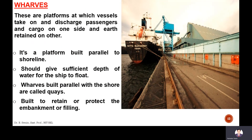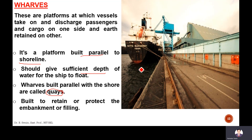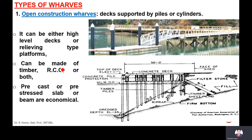Wharves are like platforms at a rail station — these are platforms at which vessels take on or discharge passengers and cargo on one side and return on the other. Wharves can be constructed at any point in the harbour. A platform built parallel to the shoreline where the vessel lies alongside is called a quay. Sufficient depth is required here so that the ship can float and loading and unloading can happen. The open construction wharf has decks supported by piles and cylinders.